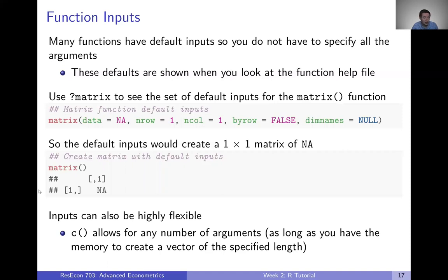Inputs can also be highly flexible. For example, if you pulled up the help file for c, that function that creates vectors, what you'll see is that the input is just dot dot dot. And what that means is that you can give it any number of arguments that you want. So you could use c, you could put in one, you could put in two, you could put in a billion numbers and create a vector of that length, as long as you have the memory to actually create that size vector. So you might see that dot dot dot in some of your functions when you pull up help files, and that's what that means. It's like extra flexibility that goes beyond whatever flexibility is already built into the function.